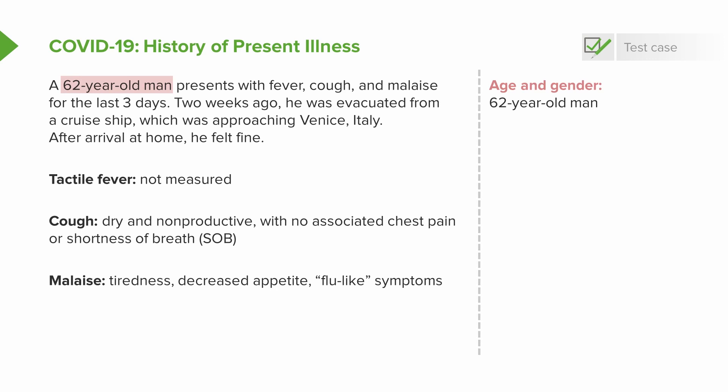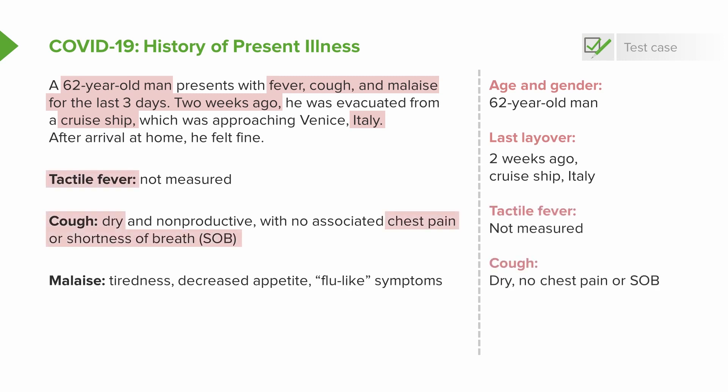Age and male sex are risk factors already emerging in COVID-19 as potentially suggesting more severe advanced disease. He's had his illness for three days, and two weeks ago had exposure to a known source of COVID-19 via the cruise ship and Italy. However, simply being on a cruise ship or vacation also increases risk for other respiratory viral pathogens, so none of these specifically delineate COVID-19 as the causative disease. The tactile fever, dry cough, and absence of chest pain or shortness of breath are all very likely early presentation signs for any viral process.